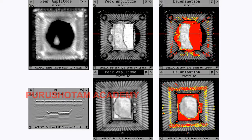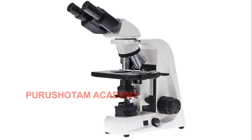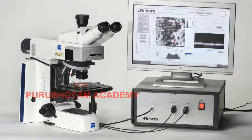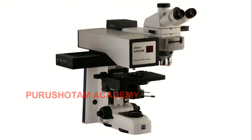Transducers produce frequencies of 5 to 150 MHz that are modulated and diffracted by structures within a sample. Computer analysis of the resulting waveform gives an image of what lies within.